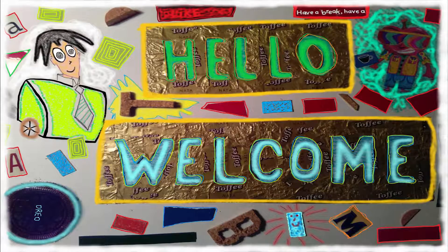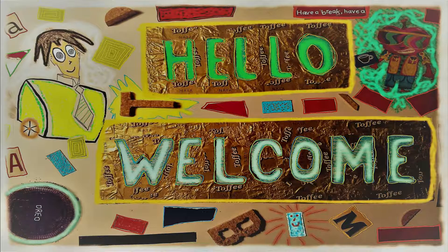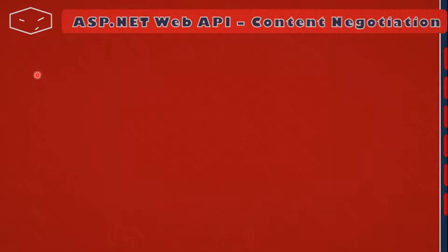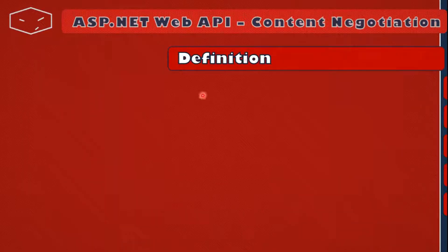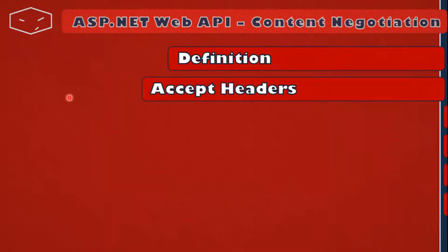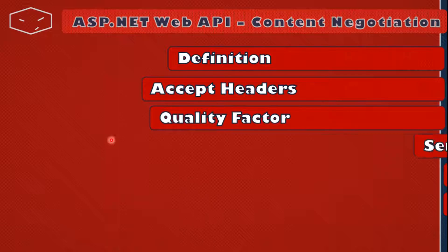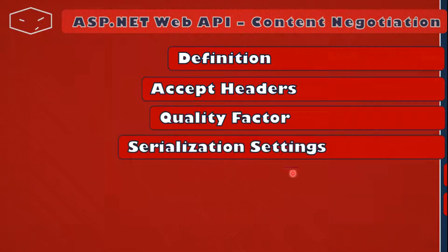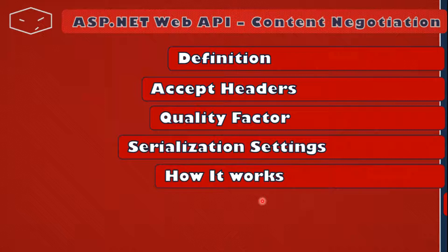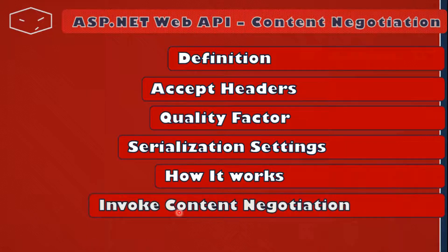Hello and welcome. We will start by seeing the definition of content negotiation. After that we will see some concepts like accept headers, the quality factor and the serialization settings. Finally, we will see how it works and how to invoke the content negotiation from our code.